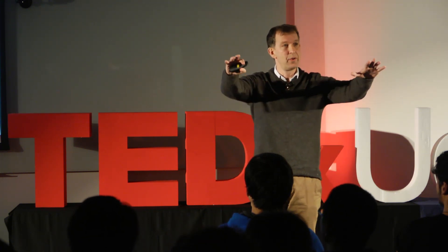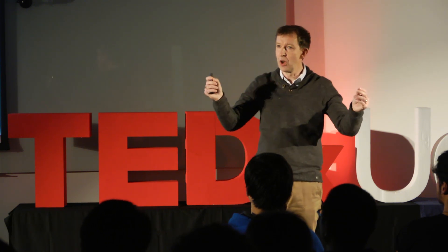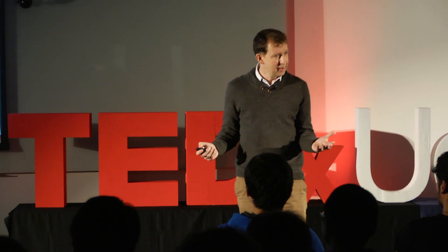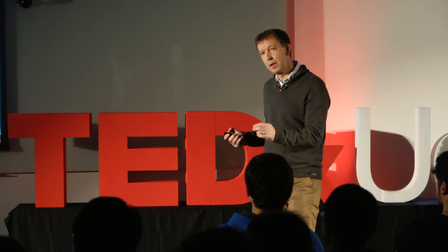A universe which is smooth everywhere — homogeneous and isotropic, looks the same in all directions — can have three basic shapes: it can be like a closed sphere, it can be like an open saddle, or it can be like a flat sheet of paper, depending upon how much energy there is in the universe. Our universe today appears very much like that flat sheet of paper. If I work out what it must have looked like a second after the universe began, it has to be flat to 15 decimal places. That's remarkable fine-tuning in the early universe — something we need to understand. It's an initial condition problem.